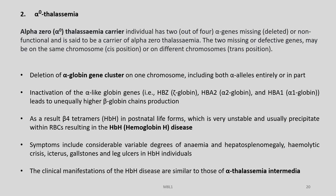Alpha-0 thalassemia carrier individuals have two out of four alpha genes missing or deleted. The two missing or defective genes may be on the same chromosome (cis position) or on different chromosomes (trans position). Inactivation of the alpha-like globin genes leads to unequally higher beta-globin chain production. As a result, beta-4 tetramers form in postnatal life, which are very unstable and usually precipitate out within RBCs, resulting in hemoglobin H disease. Symptoms include variable degrees of anemia, hepatosplenomegaly, haemolytic crisis, icterus, gallstones, and leg ulcers.